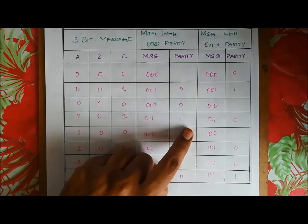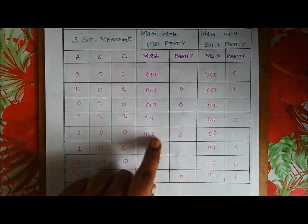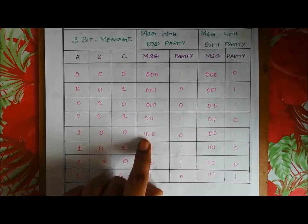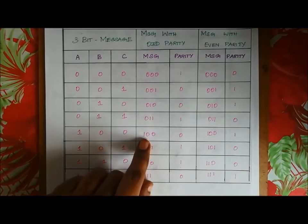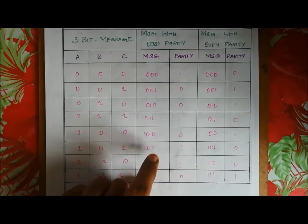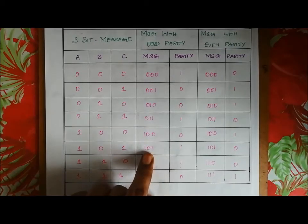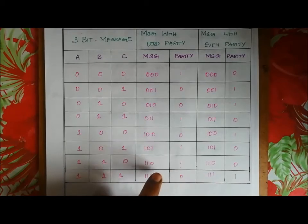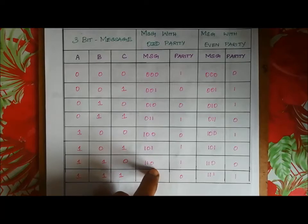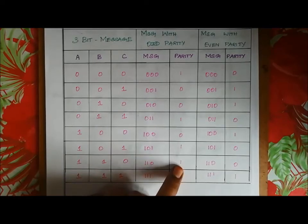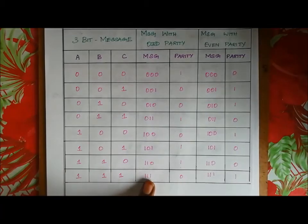For message 0 1 1: total number of 1s is 2, which is even. To make it odd, we add parity bit 1, making the total 3 — an odd number. For message 1 0 0: total number of 1s is 1, already odd, so we add parity bit 0. For message 1 1 0: total 1s is 2 — even — so we add parity bit 1 to make total 3.